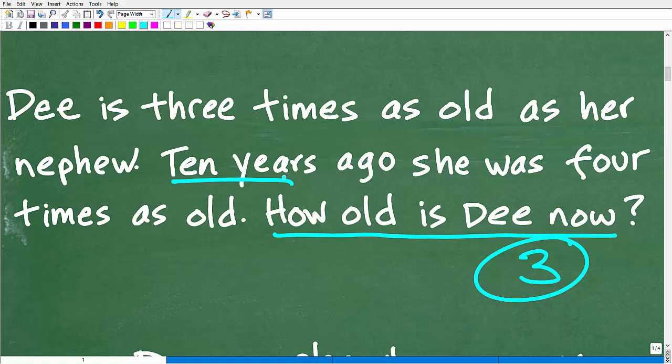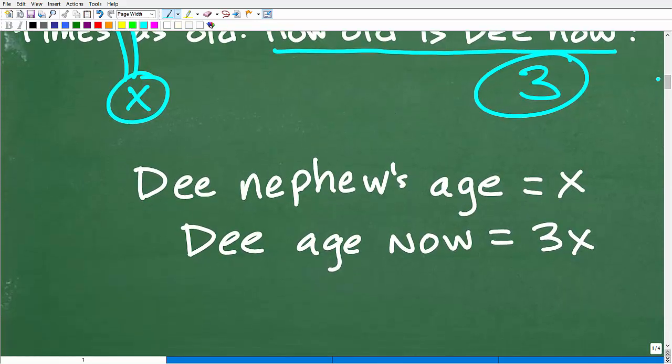In algebra, there's different types of problems that come up all the time. An age type word problem like this is pretty common. We're going to use a simple variable. We're going to let the variable X represent someone's age. Whose age should we let X equal to? Should we let it equal to D's age or maybe her nephew's age? And should we let this variable X represent the age ten years ago or the current age? If you really put some thought into it, it's easier to let X equal the nephew's age.